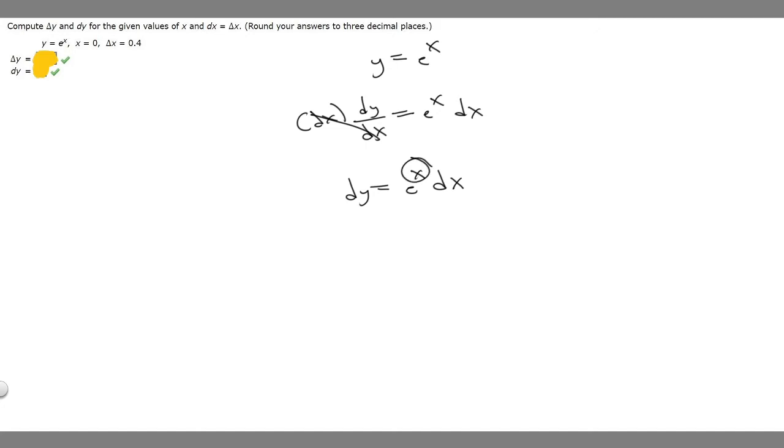What we need to do is just plug in x and dx. So x is going to be equal to 0. So dy is going to be equal to e to the 0 times dx. They tell us that dx is going to be equal to delta x, which is 0.4. So we just plug in 0.4.